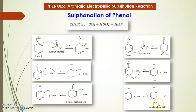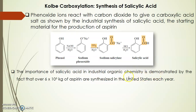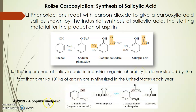The final reaction is carboxylation, the Kolbe-Schmitt reaction, used for synthesizing salicylic acid. Phenol reacts with sodium hydroxide to form sodium phenoxide, which then reacts with carbon dioxide to give a carboxylate salt — sodium salicylate. This is then hydrolyzed in the presence of acid to form salicylic acid. Salicylic acid is an important material for the production of aspirin; the importance of salicylic acid is demonstrated by the fact that over 6×10⁶ kilograms of aspirin are synthesized in the United States each year.